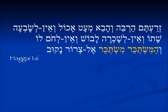In Haggai 1:6 we see it in the participle form. Remember, your participles in the hitpa'el binyan are going to begin with mem. So it's hamistaker — mistaker — the one who is earning wages. He is earning wages to put them in a pocket with a hole in them.